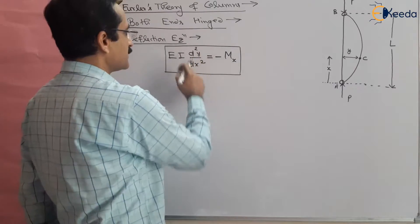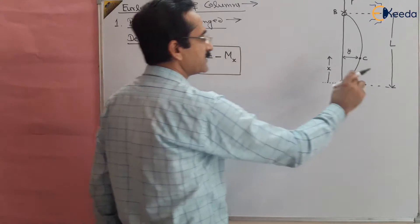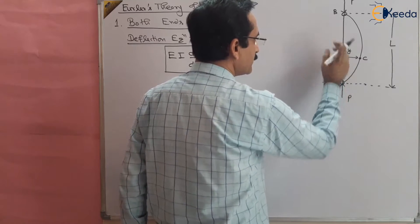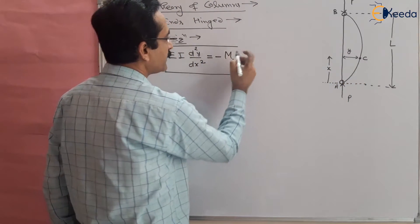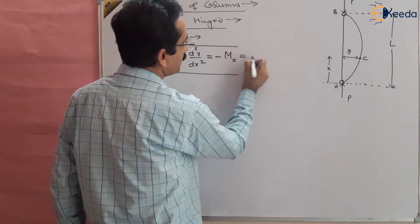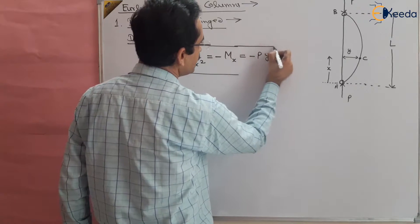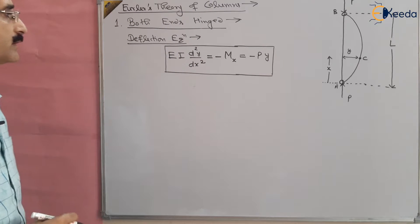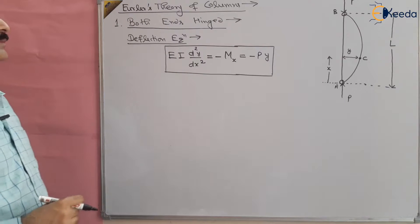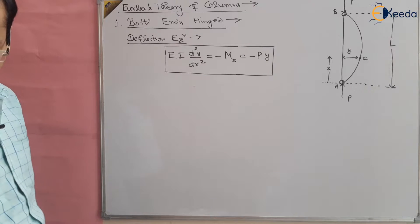From this equation, you know that the bending moment is given by P — the load — multiplied by the perpendicular distance, which will be equal to minus P multiplied by y. So the deflection equation becomes: EI d²y/dx² = −Py.